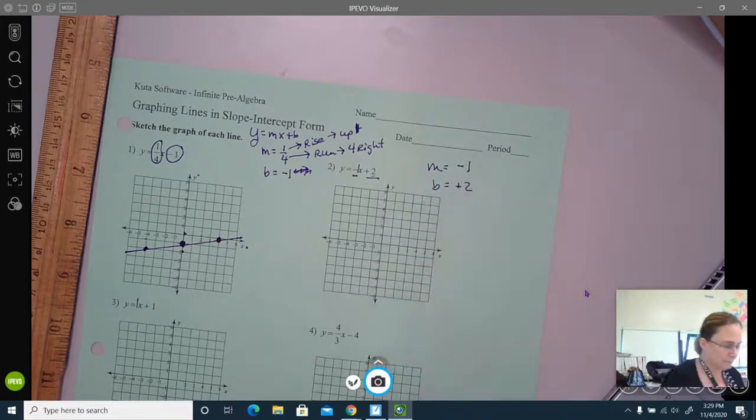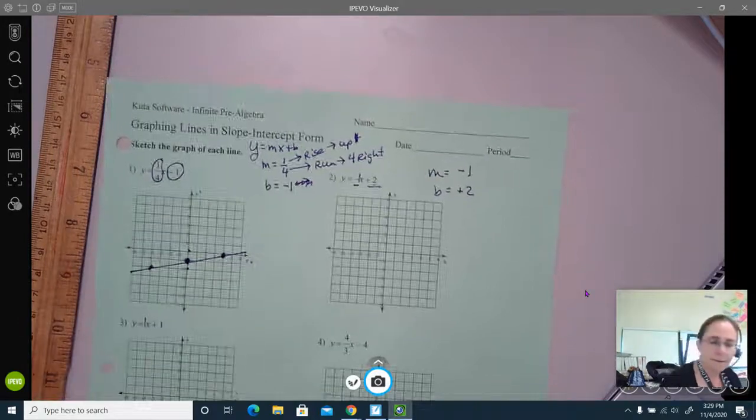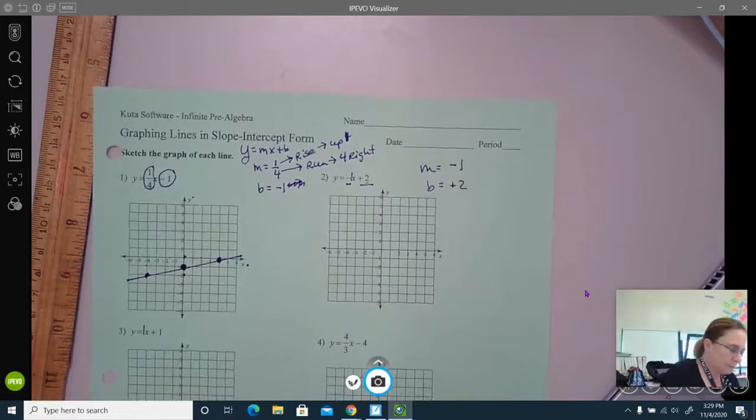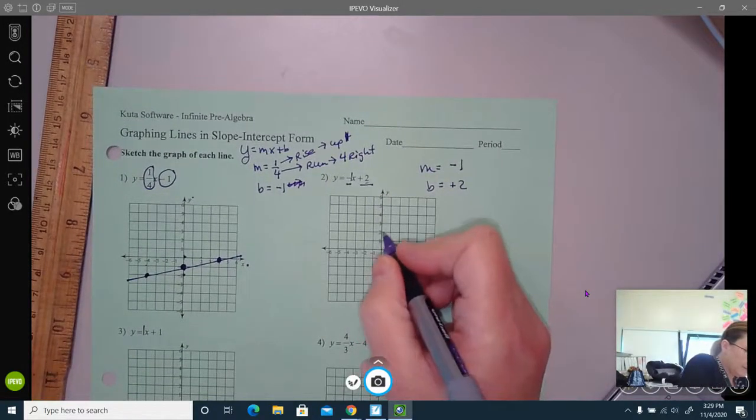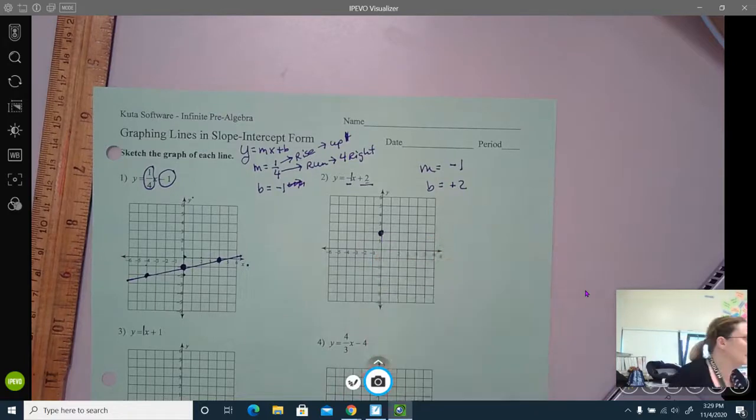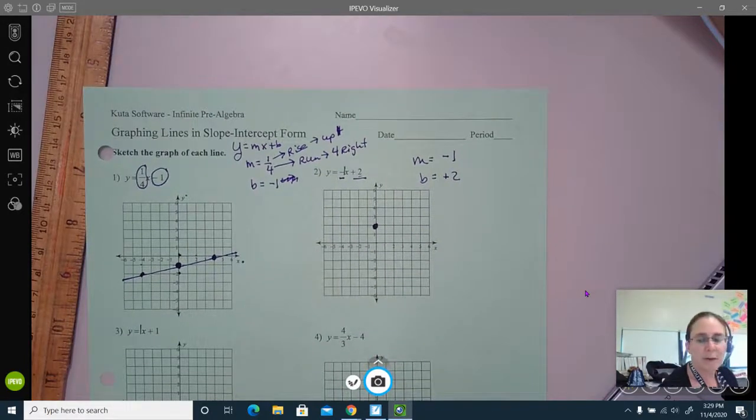So I'm going to make my first point at positive two to indicate the y-intercept. And now my pattern for my constant rate of change is based on the slope.